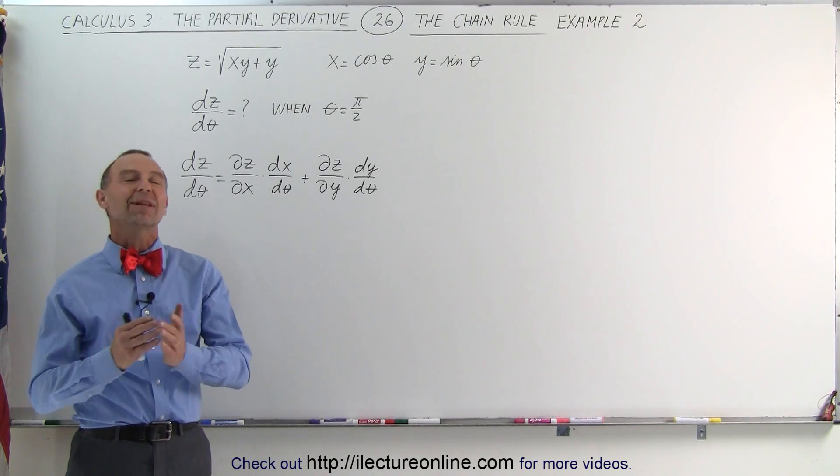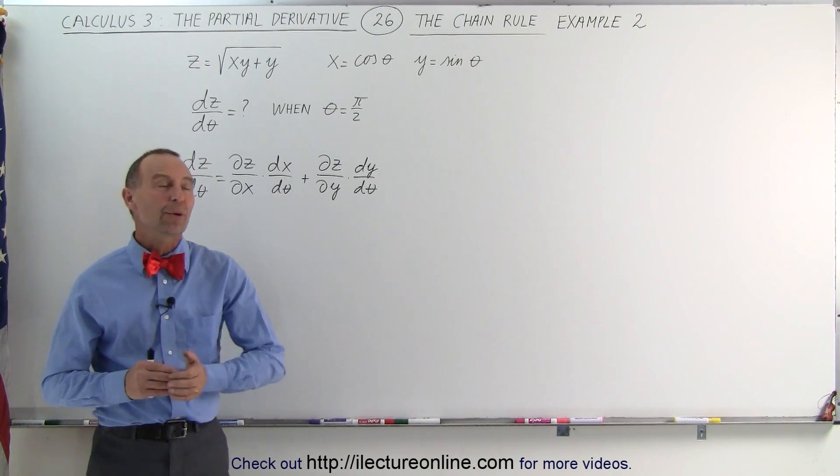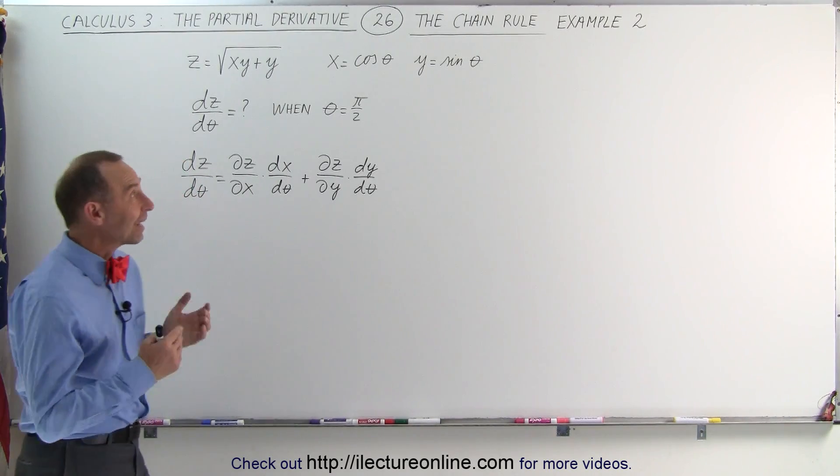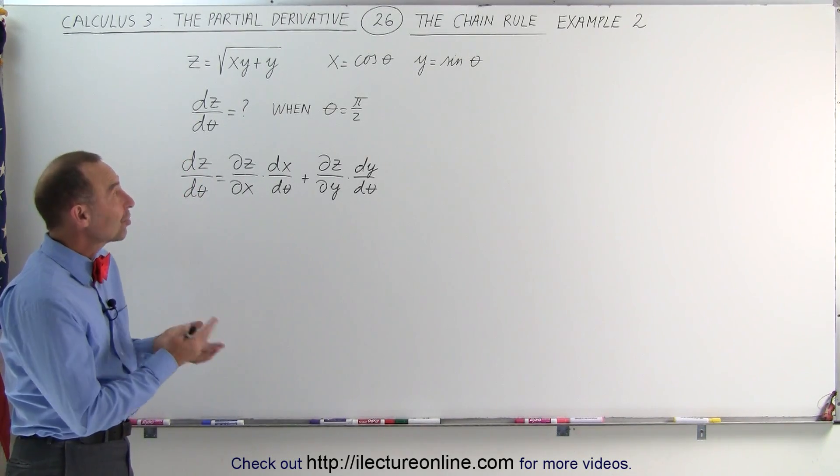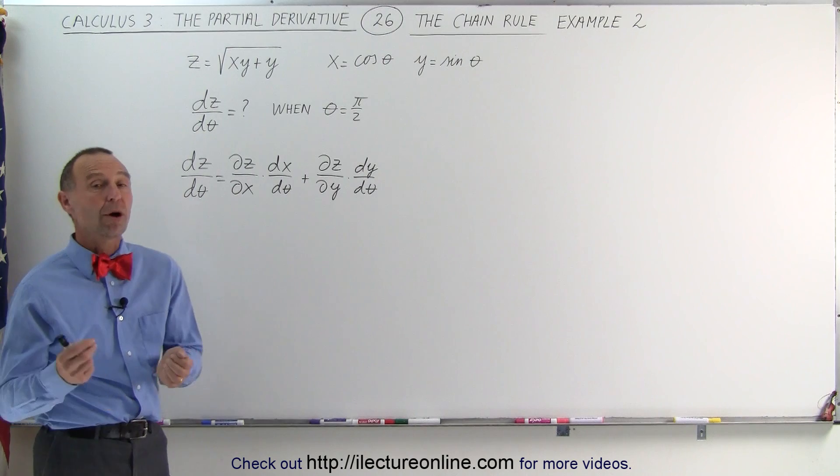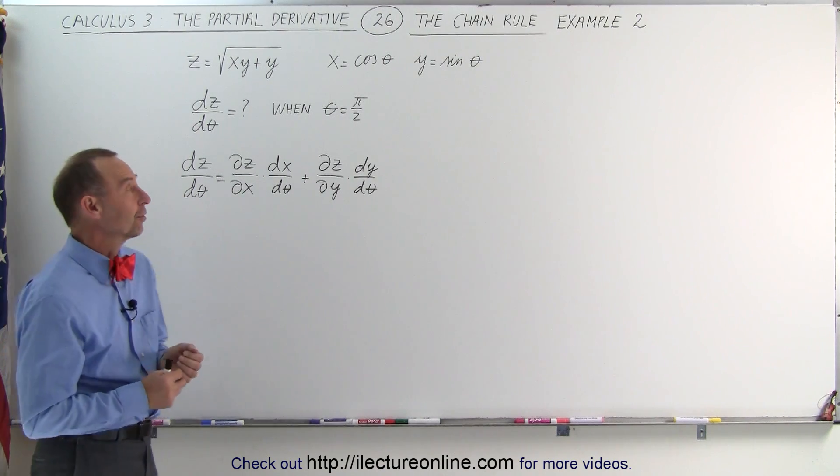Welcome to Electron Online. Here we're going to do a second example of the chain rule using partial derivatives.